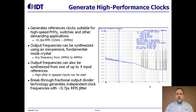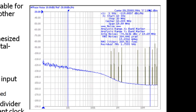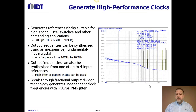One of the key features of the device is it's able to generate high performance clocks. We're able to generate clocks that can serve as references for high speed PHYs, switches, and other demanding applications — clocks that have less than 0.3 picoseconds of RMS jitter. These output frequencies can be synthesized using an inexpensive fundamental mode crystal running anywhere from 10 MHz to 40 MHz, generating outputs that are completely independent of that crystal frequency, allowing you to use a crystal that's already on your approved parts list. The output frequencies can also be synthesized from any one of up to four input references per PLL. These input references can be very high jitter or even gapped input clocks, such as you see in the OTN space, and still generate that level of performance on the outputs.